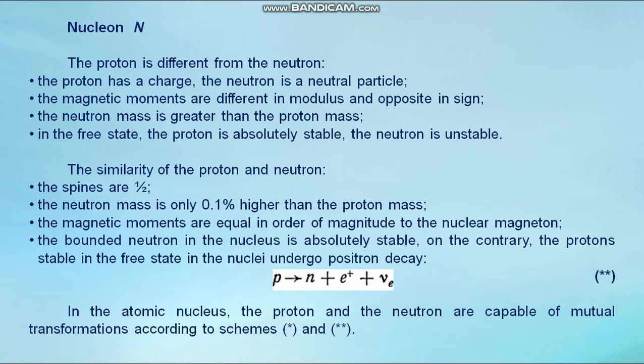Nucleon. The proton is different from the neutron. The proton has a charge. The neutron is a neutral particle. The magnetic moments are different in modulus and opposite in sign. The neutron mass is greater than the proton mass. In the free state, the proton is absolutely stable. The neutron is unstable.